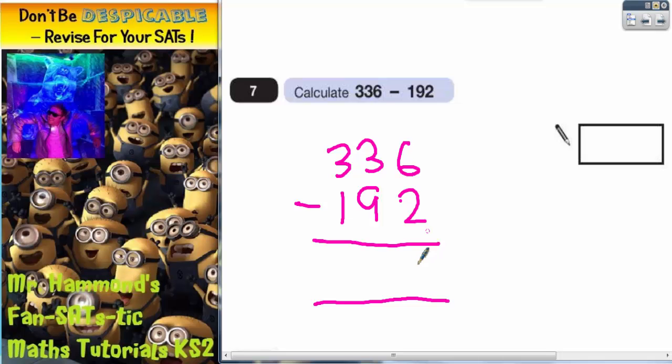So 6 subtract 2 is 4. 3 subtract 9 we can't do because 3 is smaller than 9. So we need to borrow one from the next column. So that becomes a 2. The one we borrowed makes 13. Now we can do it.